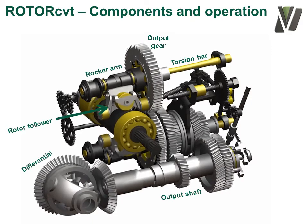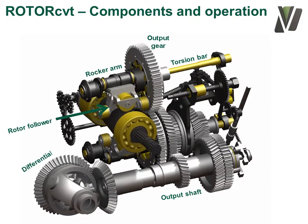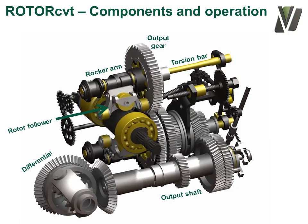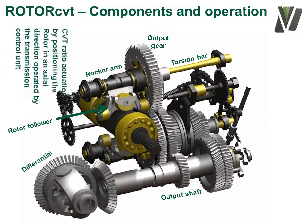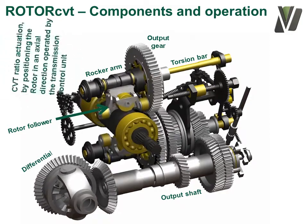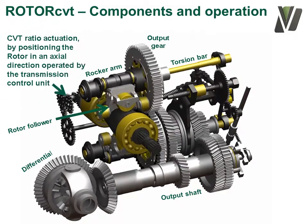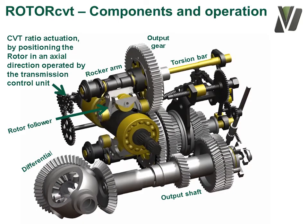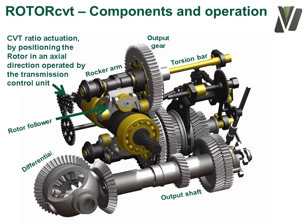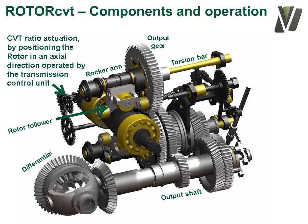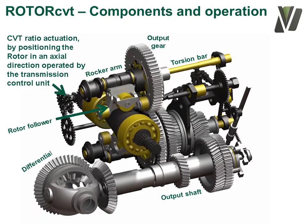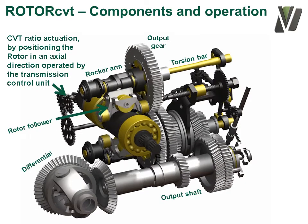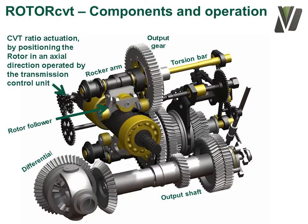As the ratio is actuated, the rotor is moved towards the viewer via a bevel gear drive and lead screw mechanism, affecting the rotor followers to run on a different actual section of the rotor, which initiates the oscillation of the rocker arms and drives the vehicle.